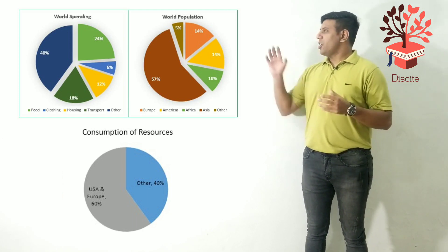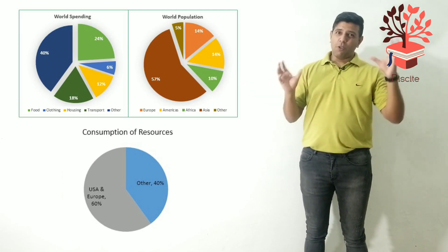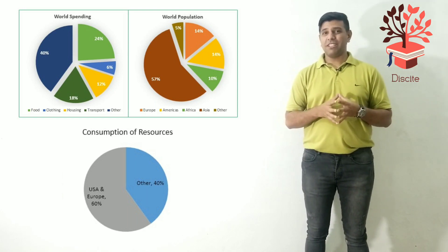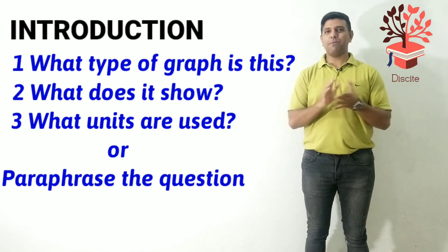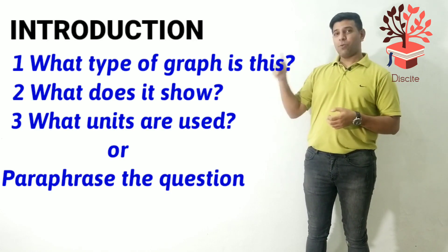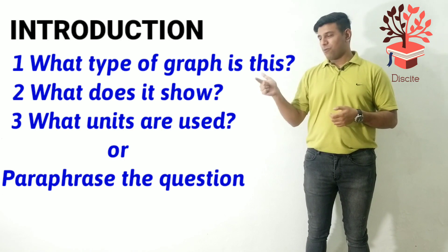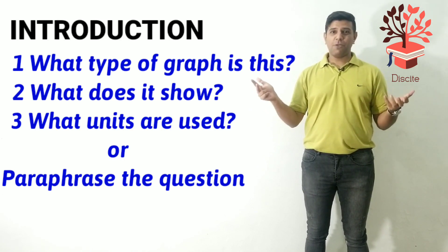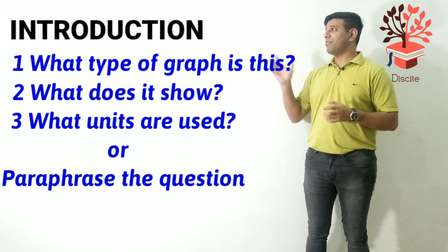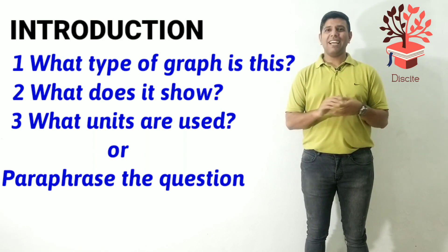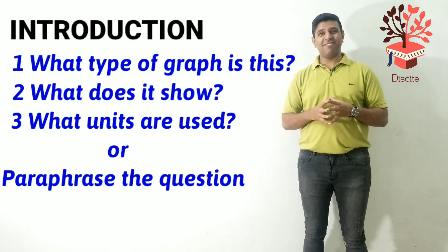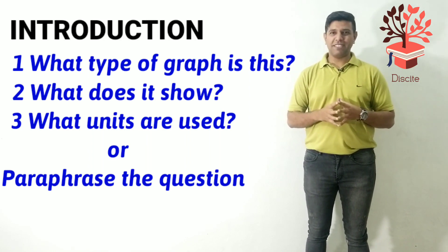So now it's pretty straightforward — we've already looked at all the connections and we know all the numbers. The first thing we need is an introduction, and that's pretty simple. You have to talk about what type of graphs these are, what they talk about, and what units are used. If you don't want to do that, you can paraphrase the question that is given. In this case the question already says exactly what the headings are, so you can paraphrase that.